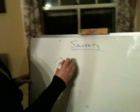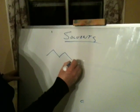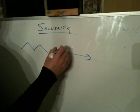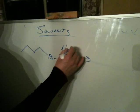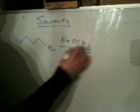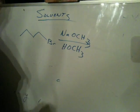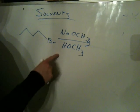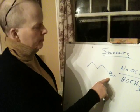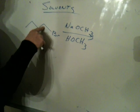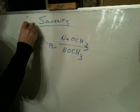So if we had something like this and we added NaOCH3 in methanol, this reaction would work. You would look at it and say, I've got a good leaving group, I've got a strong base, and I have a primary substrate. So this should be a very clear-cut SN2.